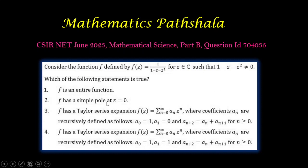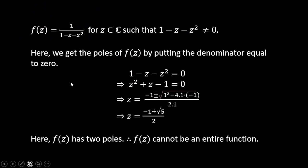Next option is: f has a simple pole at z equals to zero. But here we can see that f has not any simple pole at z equals to zero. f has only two poles: that is (-1 + √5)/2 and (-1 - √5)/2.